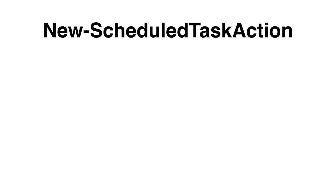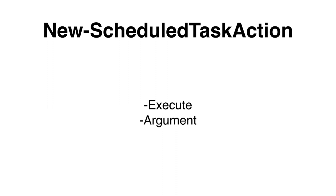To create a task action, we can use the New-ScheduledTaskAction cmdlet. In the Execute parameter, we need to specify the path to our executable. We can use the PSHome variable to do less typing. In the Argument parameter, we need to specify the location of the script that we would like to run. I will demonstrate this later, because there is no easy way to explain how this should work.